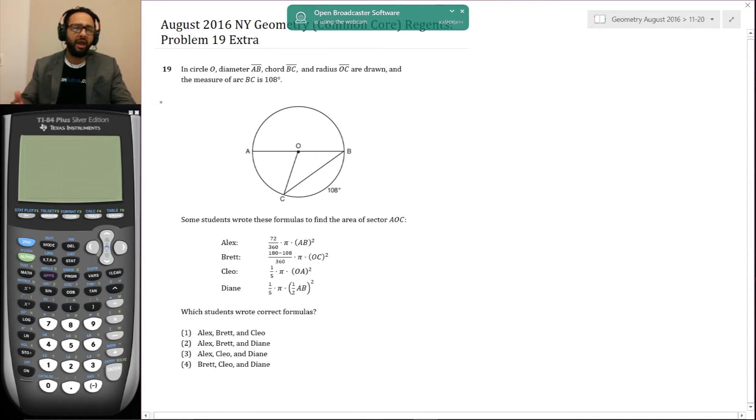In circle O, diameter AB, chord BC, and radius OC are drawn and the measure of arc AB is 108. Some students wrote these formulas to find the area of sector AOC. Now this is the sector AOC, which is actually less than half the area of the circle. It's less than a quarter. It looks like about a fifth of the area of the circle. Now Alex, Brett, Cleo and Diane have these formulas. Which student wrote the correct formula? It's three out of the four.